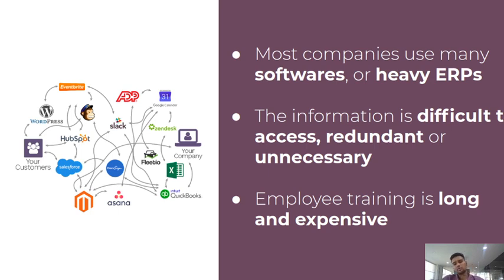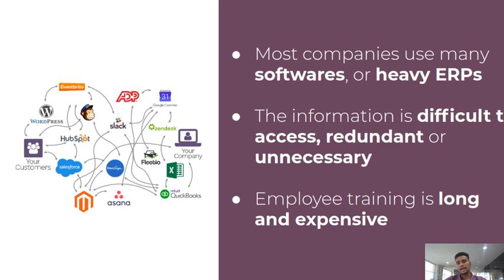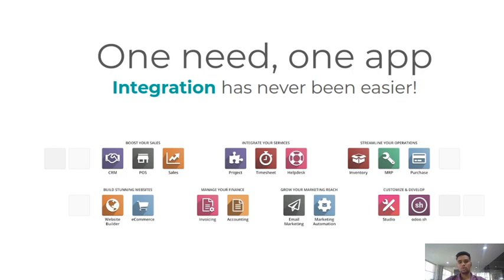Most companies use many software systems with heavy ERPs where information is difficult to access. Employee training is long and expenses are high. If you're looking for software that is high quality, feature-rich, user-friendly, and fast, I suggest you go with Odoo. One important thing is that all applications are integrated — CRM, POS, sales application — that will boost your sales.